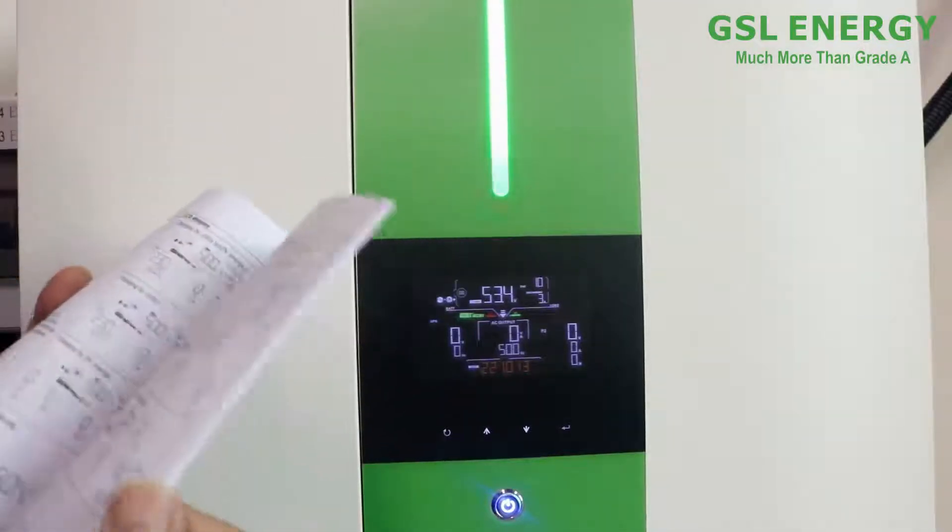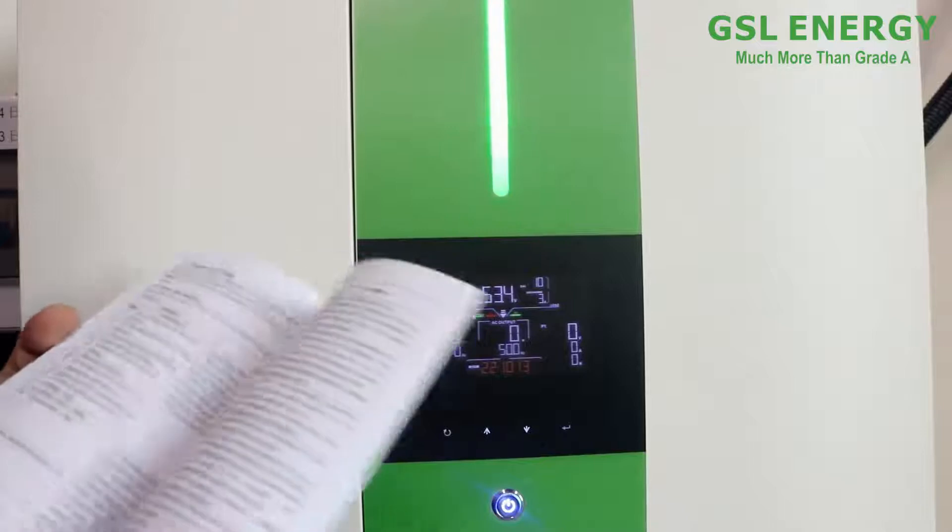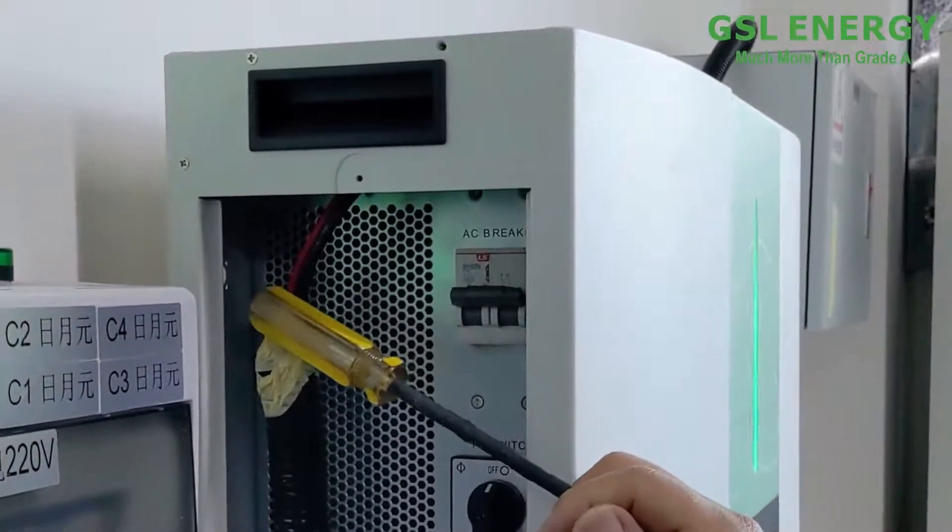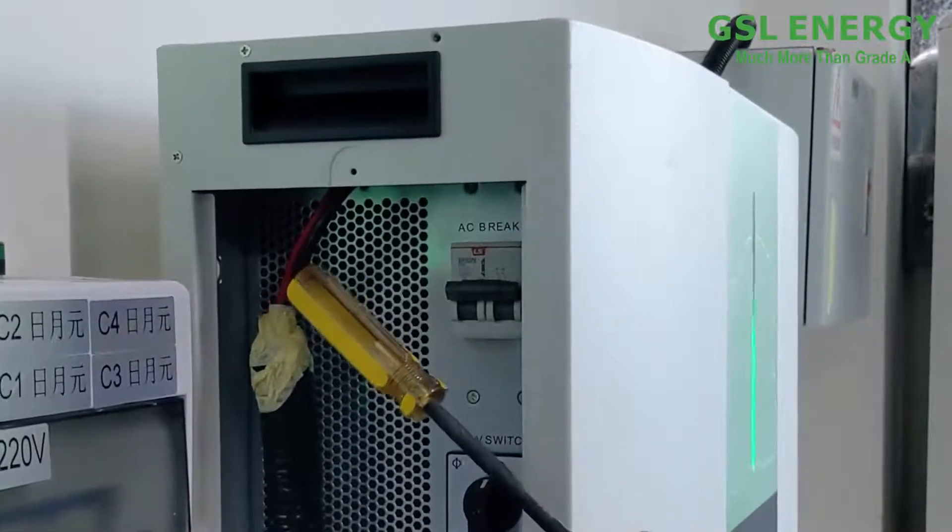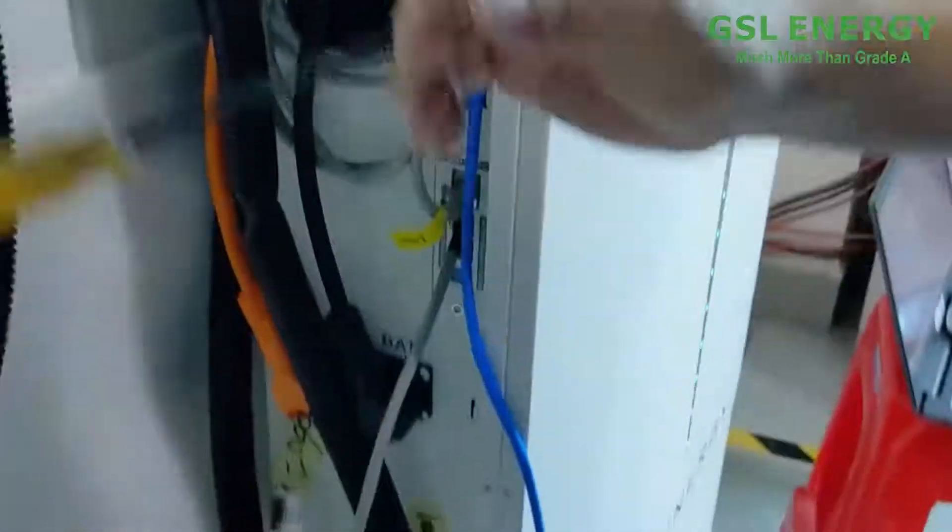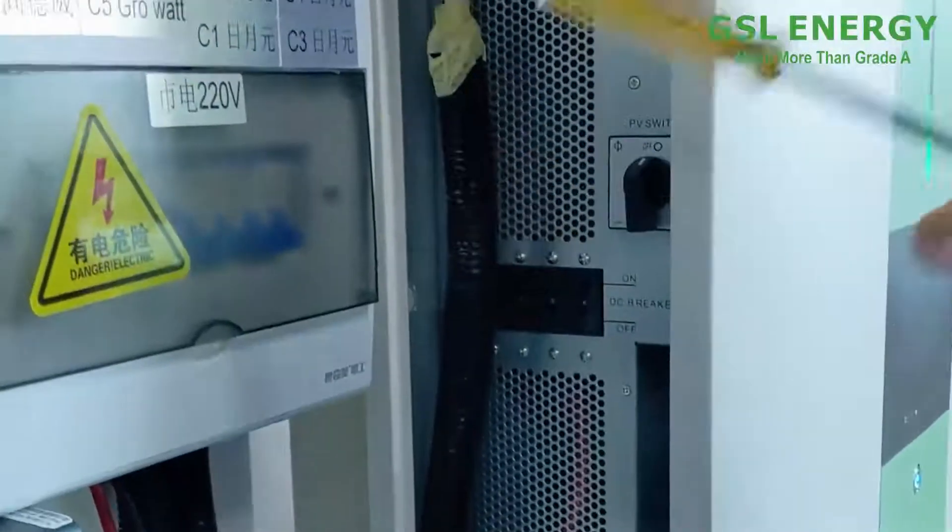And please read more of the details on the user menu. So here is the positive and the negative for the PV connector. And to connect the PV and the grid.